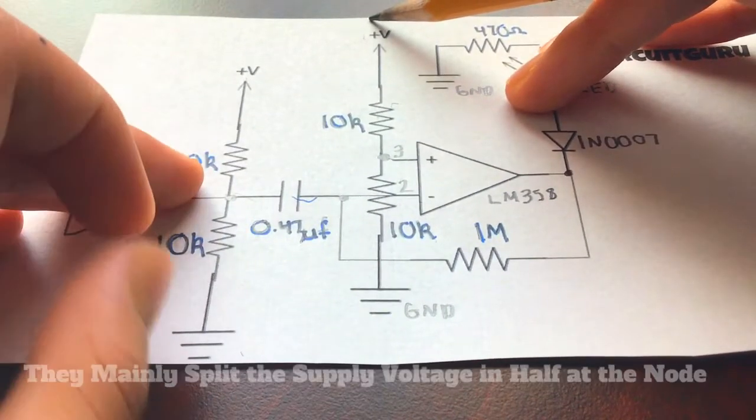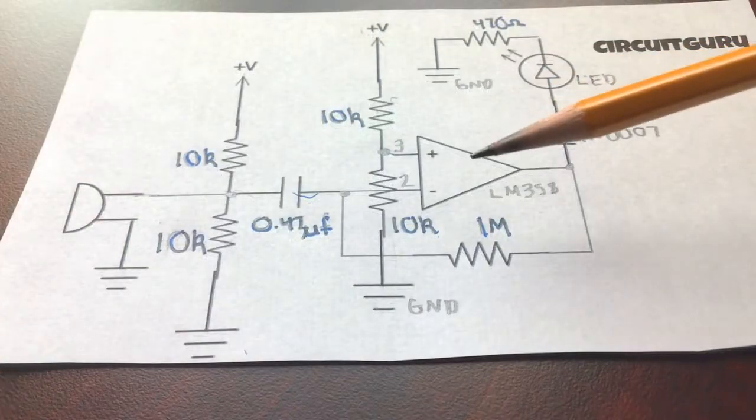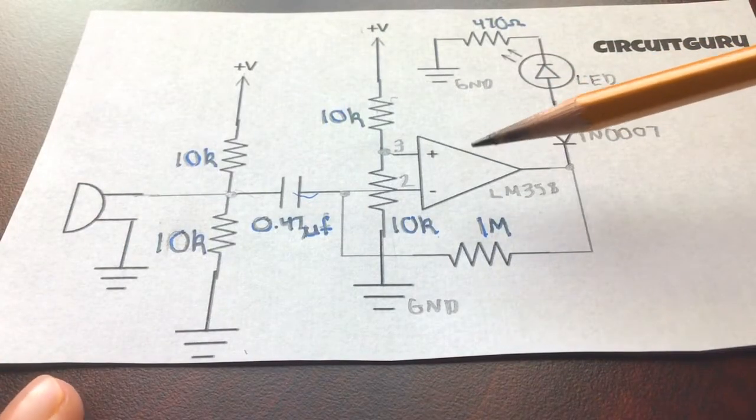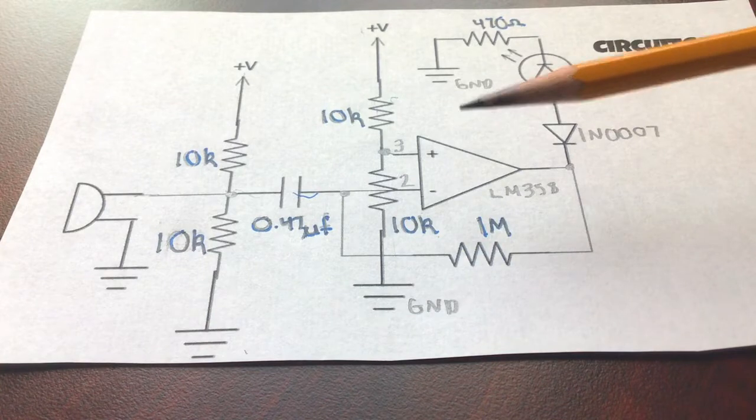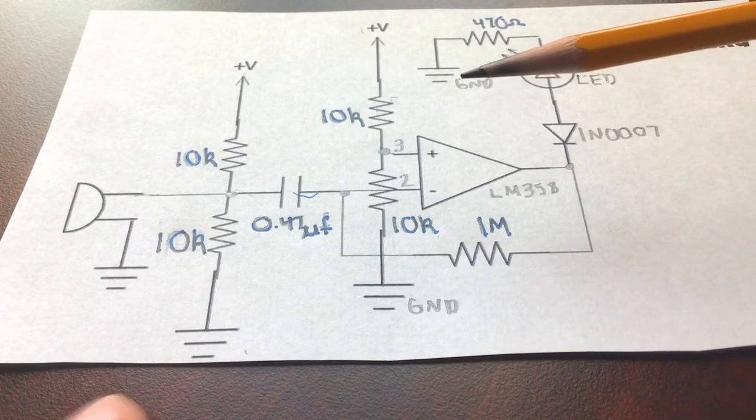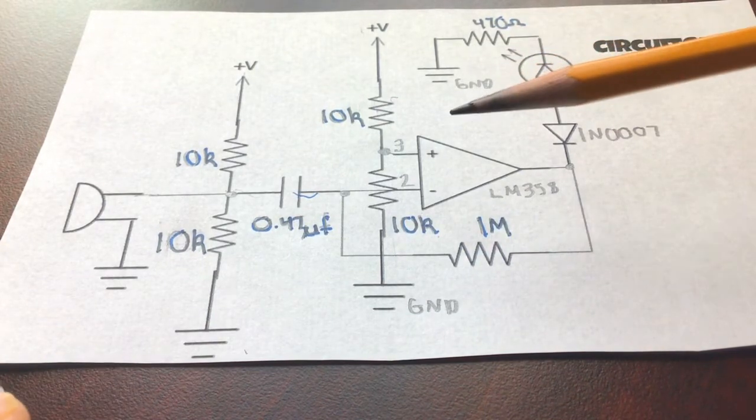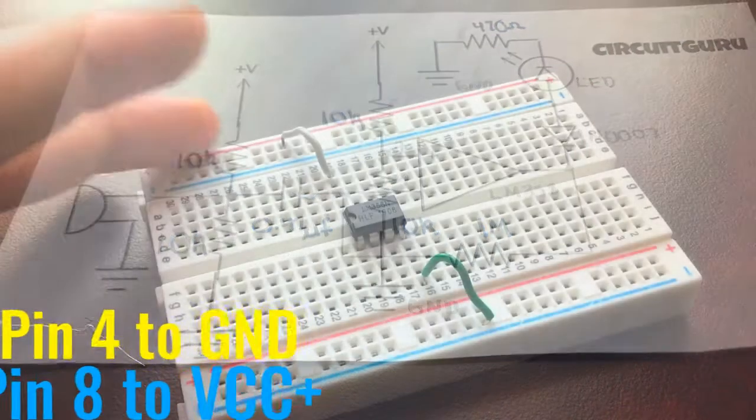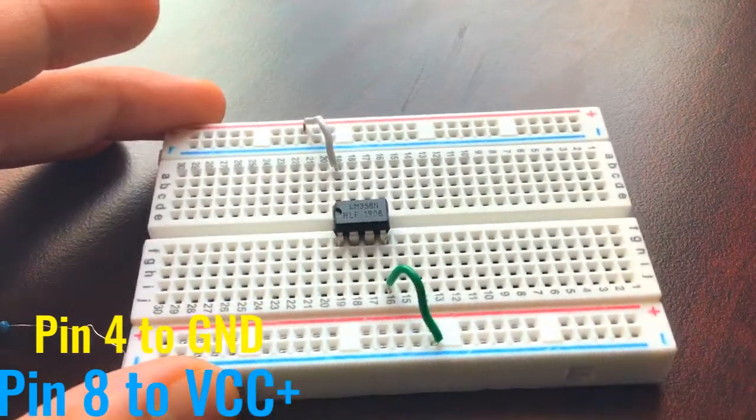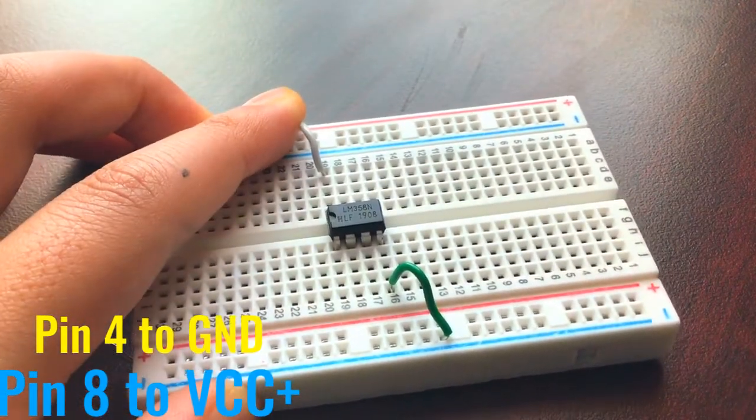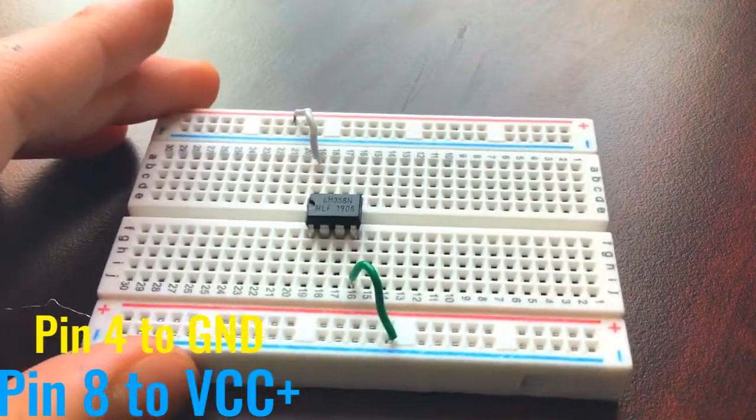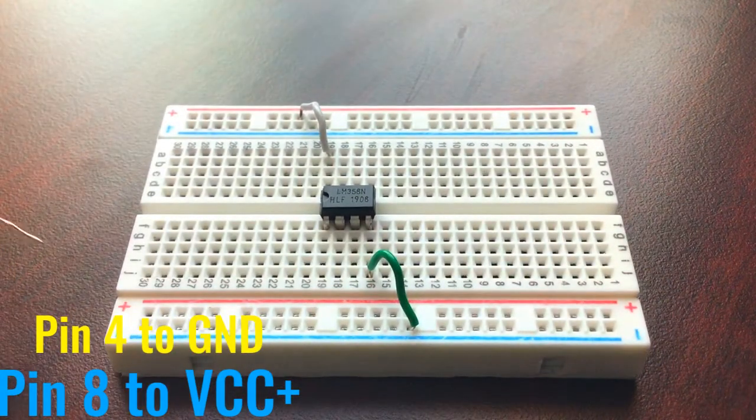A quick review on the LM358 op-amp: it's an operational amplifier, it takes two input voltages, inverting and non-inverting, and spits out an output. Our first step is to connect pin 8 to the positive rail and pin 4 to the negative rail.